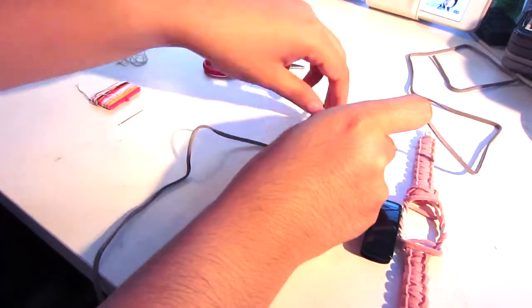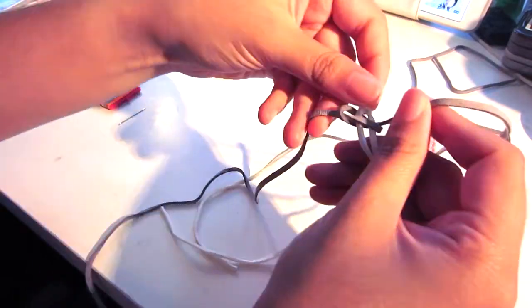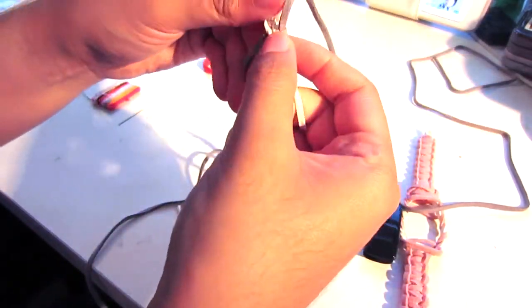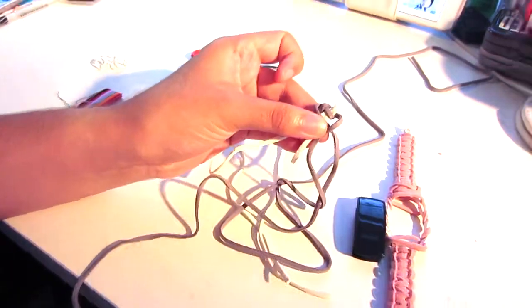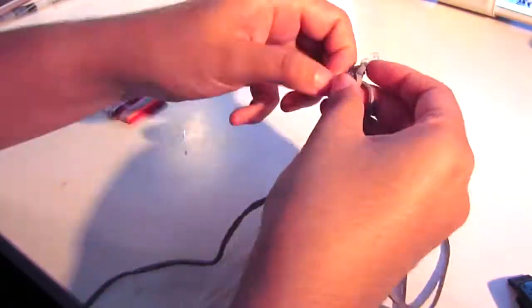So you're going to start out by folding the inner cord in half and putting it through the clasp, and then you're going to start making square knots all down the front end. I'll show you how to make it in this clip, but you can always YouTube it. There's a lot of great tutorials.